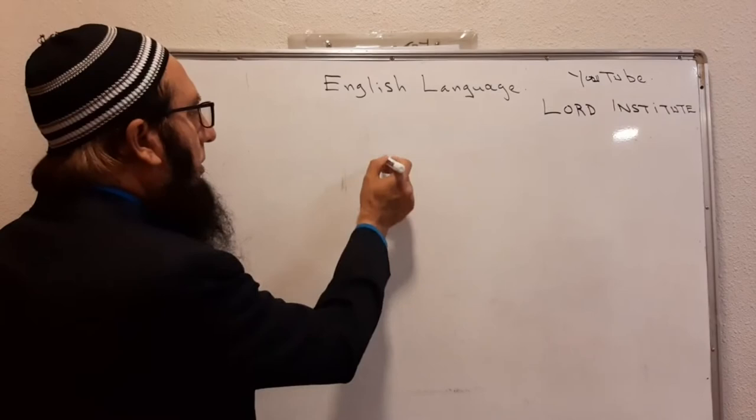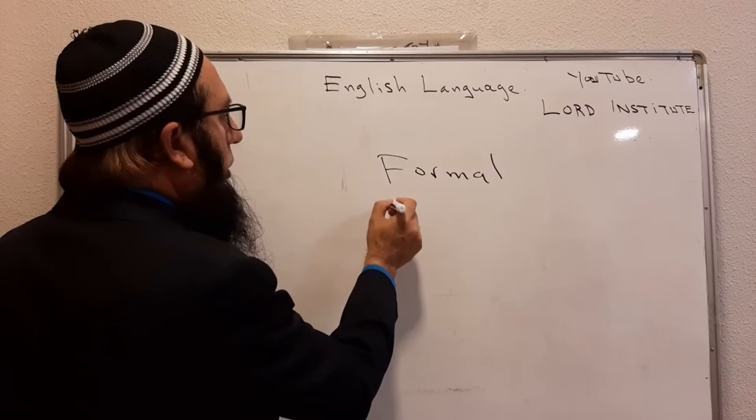Aur agar doston se guftagu mein baithe hue baat chit chahiye to aap phir formal vocabulary nahi bolte — kisi bhi zaban ki. To phir aap informal bolte hain. Doosri qism lafzon ki informal hai. Is ka ek aur naam bhi aapko mile ga: colloquial. Colloquial words aur informal words — lafzon ki qismain hain: formal words and informal/colloquial.